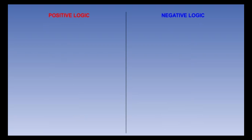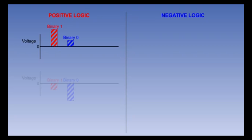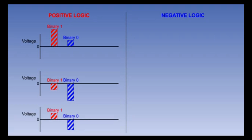In electrical circuits, the actual voltage levels required to achieve a binary one or binary zero may vary depending on whether positive or negative logic is being used. If positive logic is used, a binary one equals a high voltage level and a binary zero equals a low voltage level. The actual voltage values may be both positive, both negative, or one positive and one negative. The only stipulation for positive logic is that a binary one is created by a more positive voltage than a binary zero.